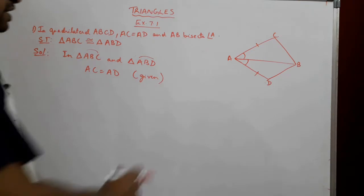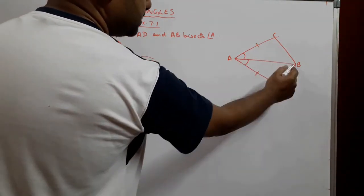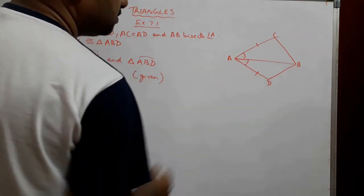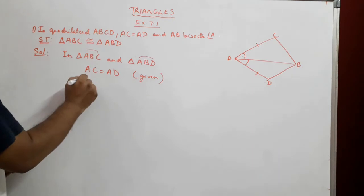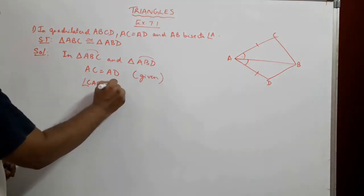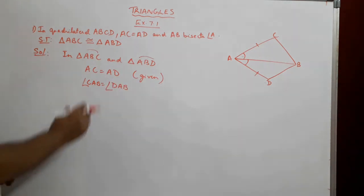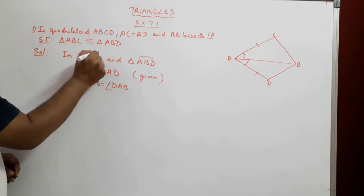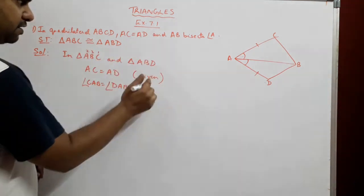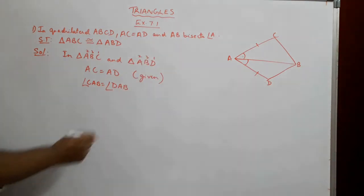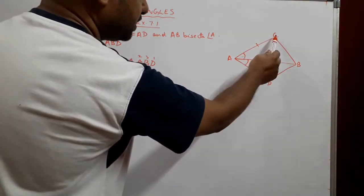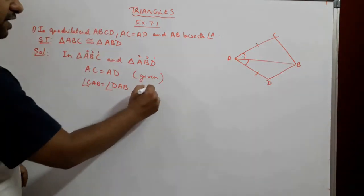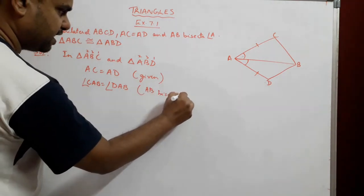We have also been given that AB bisects angle A. Bisecting means it divides the angle into two equal parts, which means angle CAB is equal to angle DAB. The reason we write is: AB bisects angle A.